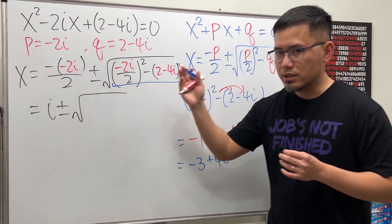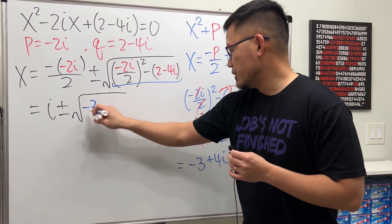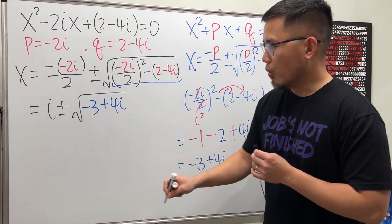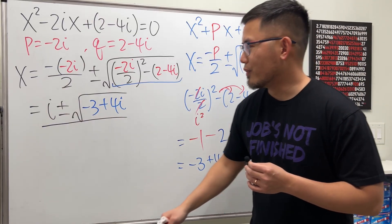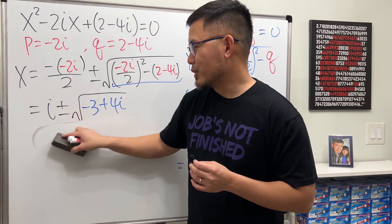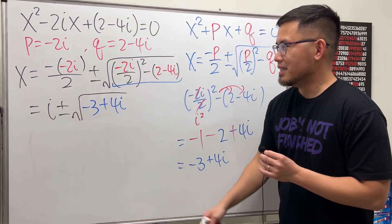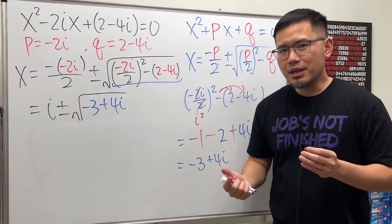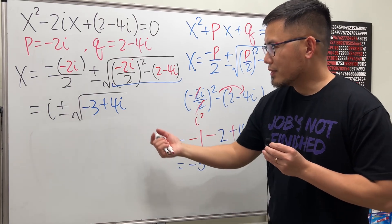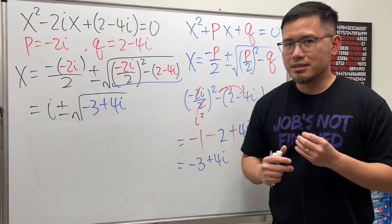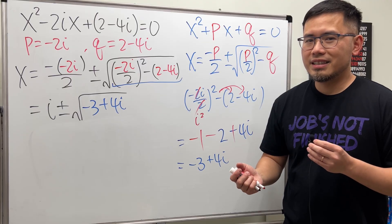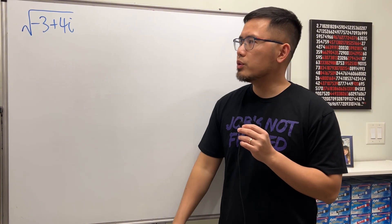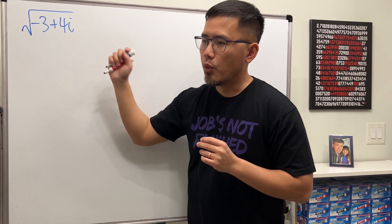So the expression inside the square root is negative 3 plus 4i. This is not the traditional ABC quadratic formula — we've already taken care of the fractions. Now it depends: we have a complex number under the square root, and we can simplify that. So let's focus on taking the square root of the complex number negative 3 plus 4i.